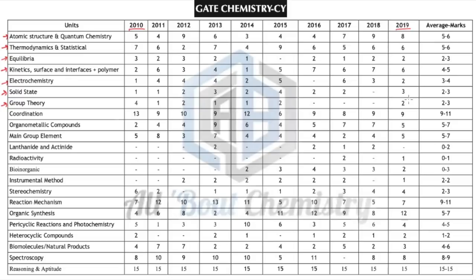Next comes coordination chemistry, which covers at least 40% of the inorganic chemistry syllabus. Up until here we discussed physical chemistry; now moving into inorganic chemistry. Coordination chemistry covers a lot of weightage especially from the inorganic portion — you can easily expect around nine to ten marks from this topic. Organometallic compounds is also a major portion, covering around 20% of the whole syllabus, and you can expect around six to seven marks from here.